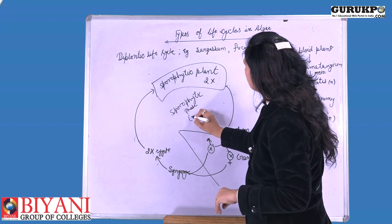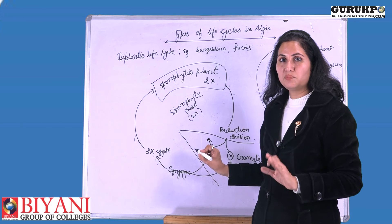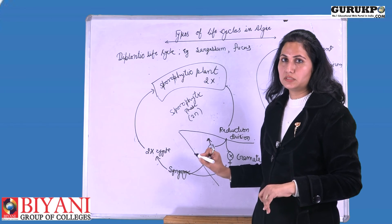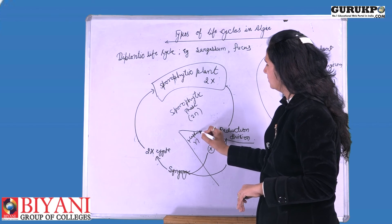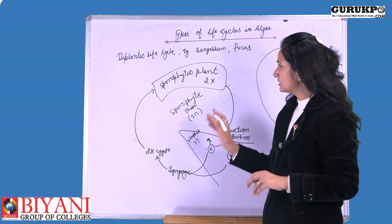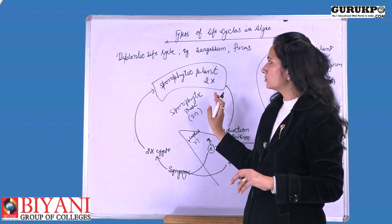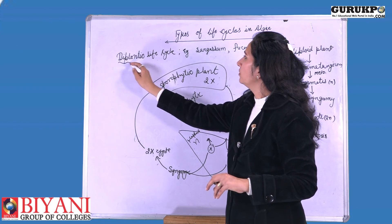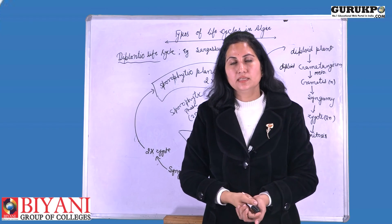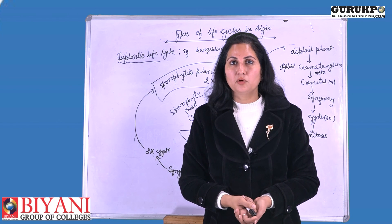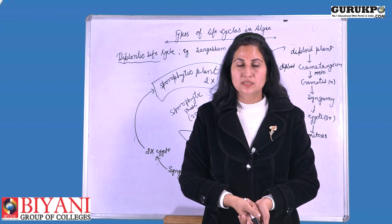So in this life cycle, most of the time the diploid or sporophytic phase resides, and only in the form of gametes is the haploid phase shown. The sporophytic generation is prolonged. Such a type of life cycle is known as the diplontic or diplobiontic life cycle. Please log on to our website gurukpo.com for more such informative videos. Thank you so much.